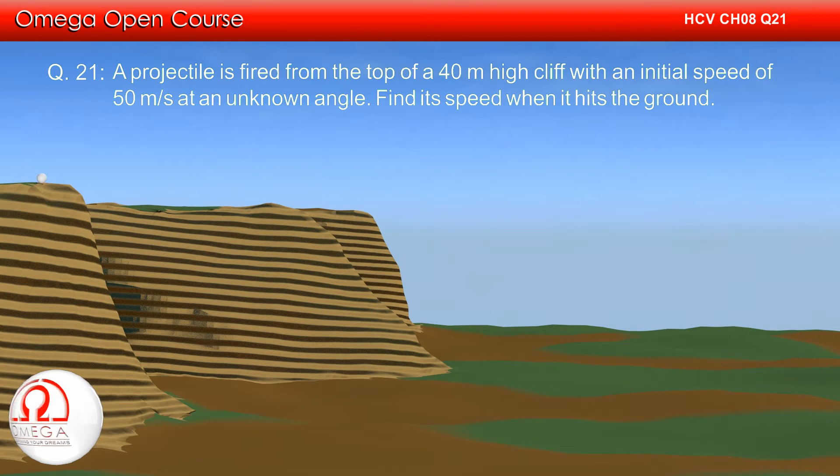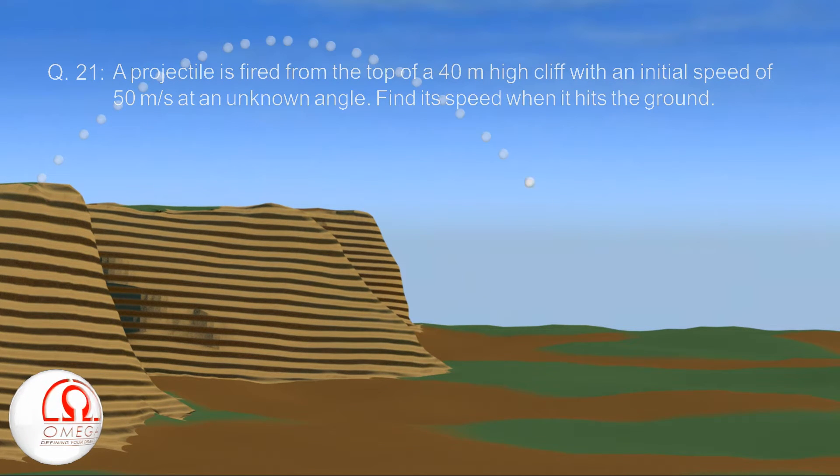A projectile is fired from the top of a 40-meter high cliff with an initial speed of 50 meters per second at an unknown angle. Find its speed when it hits the ground.